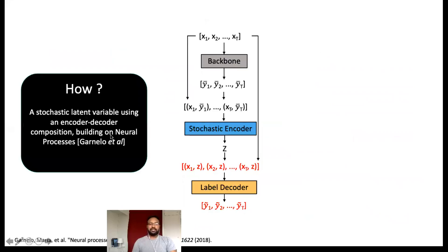We implemented our method by building on an existing method called neural process, which is an encoder-decoder composition to learn a stochastic latent variable model. Our framework mainly involves three key building blocks: the backbone model, encoder, and decoder modules.